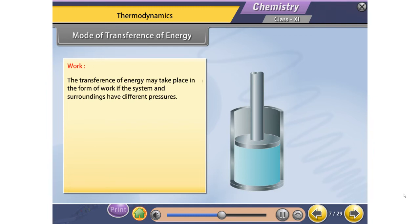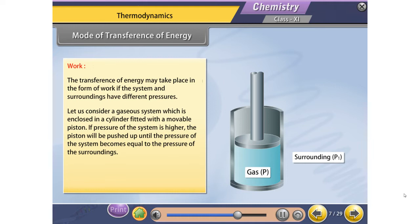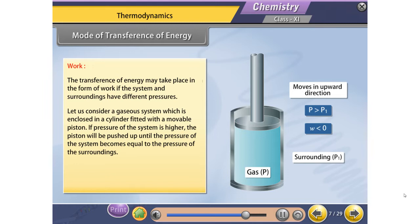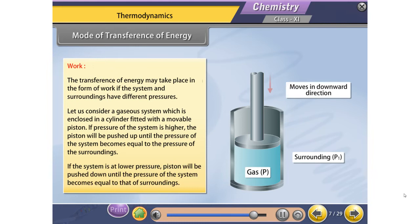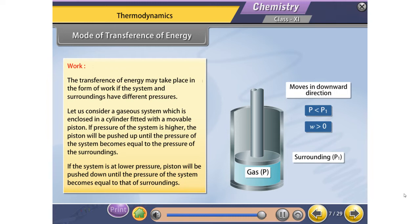The transference of energy may take place in the form of work if the system and surroundings have different pressures. Consider a gaseous system enclosed in a cylinder fitted with a movable piston. If the pressure of the system is higher, the piston will be pushed up until the pressure of the system becomes equal to the pressure of the surroundings. If the system is at lower pressure, the piston will be pushed down until the pressures equalize.